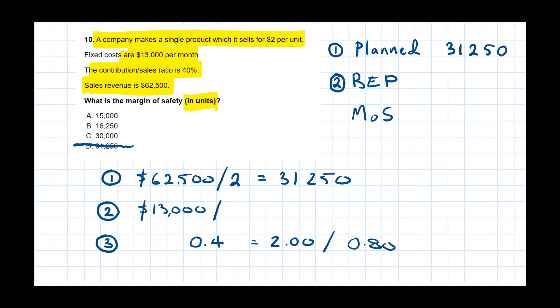Now, with that contribution per unit, we can plug that right here. And the break-even point in units, then, equals 16,250. Look, another distractor there. 16,250.